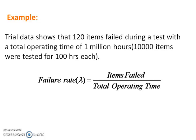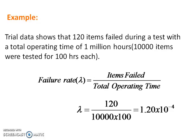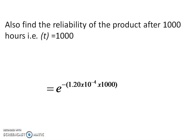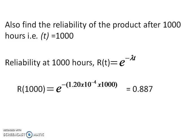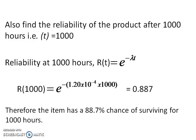We have tested 10,000 items for 100 hours each. Out of 10,000, 120 items were failed during test. So the failure rate is total item failed divided by total operating time, which comes out 1.2 into 10 to the power minus 4. Now we have to calculate the reliability of the product after 1,000 hours. So the formula is Rt equal to e to the power minus lambda t. Here t is 1,000. So we calculate the reliability at 1,000 hours equal to 0.887. It means the item has 88.7% chance of surviving for 1,000 hours.